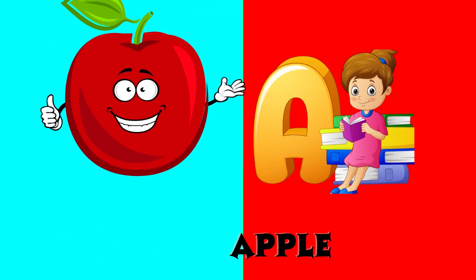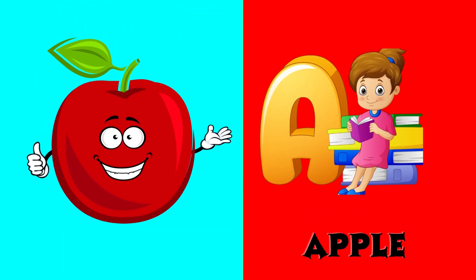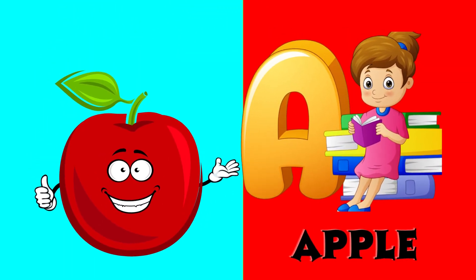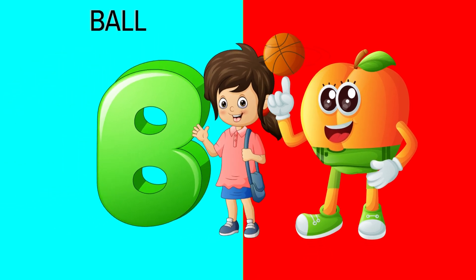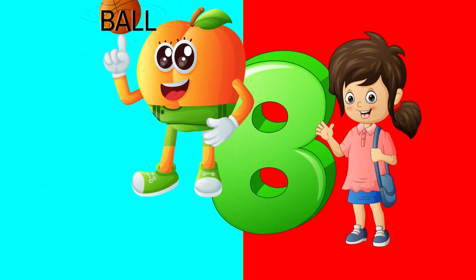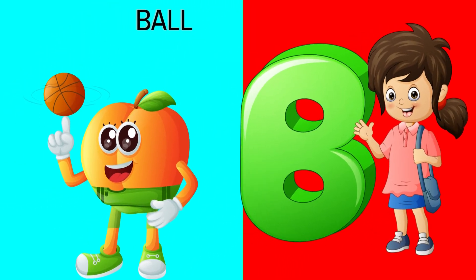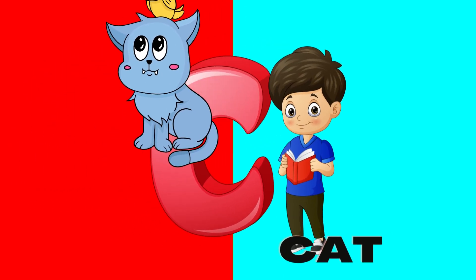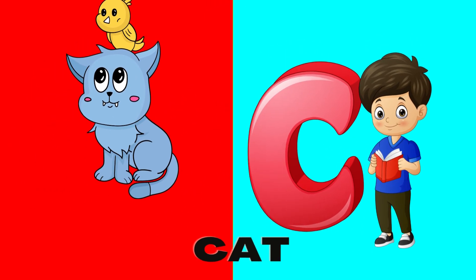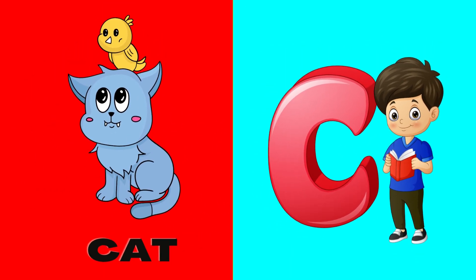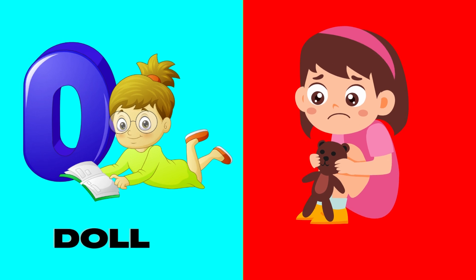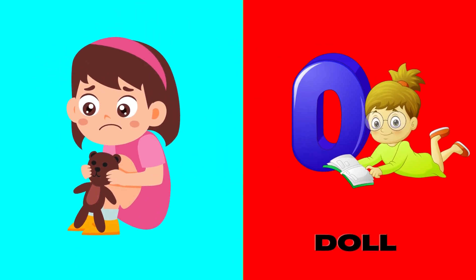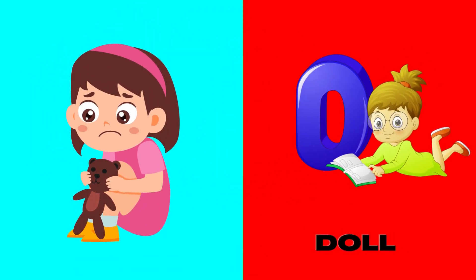A is for apple, a-a-apple. B is for ball, v-v-ball. C is for cat, c-c-cat. D is for doll, d-d-doll.